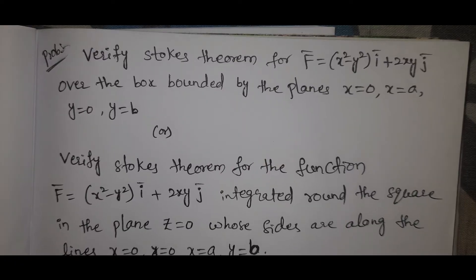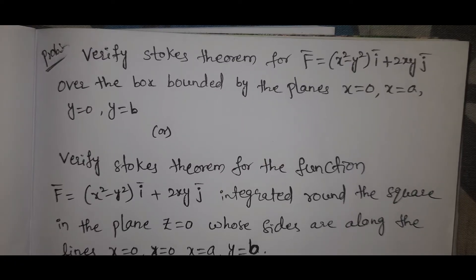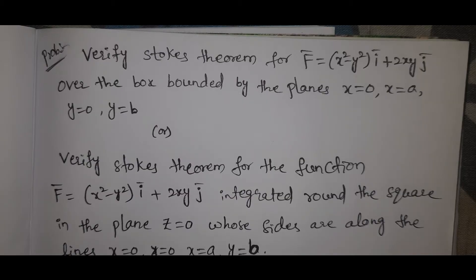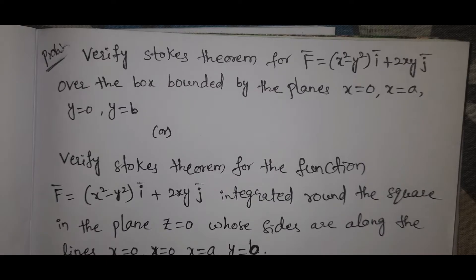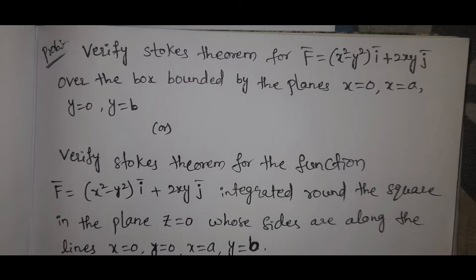Hi viewers, welcome to Rajesh Lekal. Today our topic is Stokes theorem problem. This is very very most important. Verify Stokes theorem for F̄ = (x² - y²)ī + 2xyj̄ over the box bounded by the planes x=0, x=a, y=0, y=b. Verify Stokes theorem.